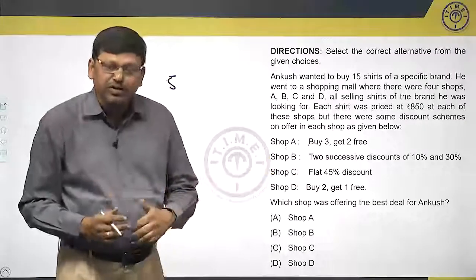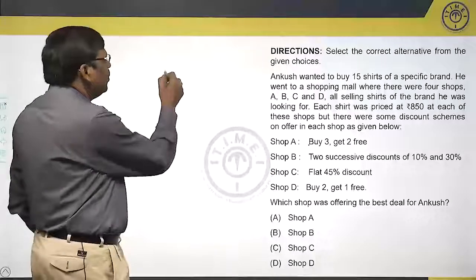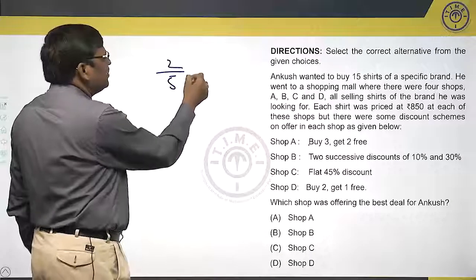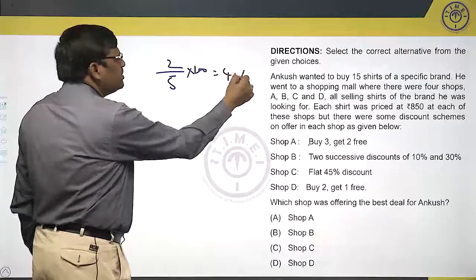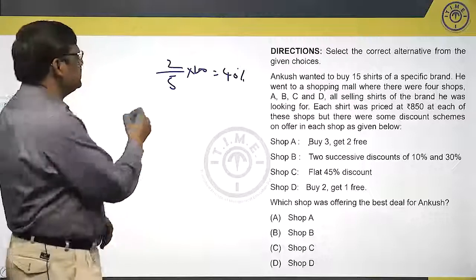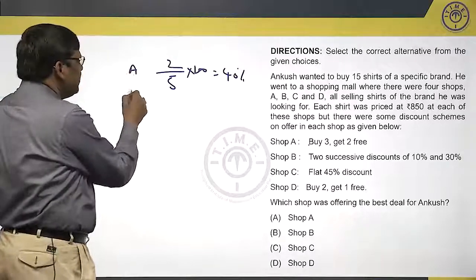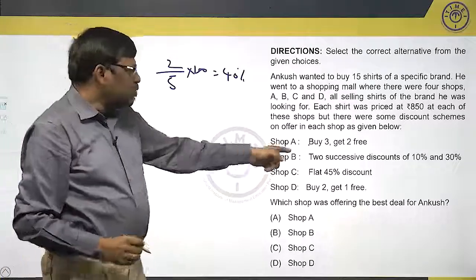Let us take the first one. What is Shop A? Offer buy 3 and get 2 free means, total if you buy 5 items, out of them 2 are free. When he is buying 5 shirts, 2 are free means he has to pay only for 3, so 2 are free.